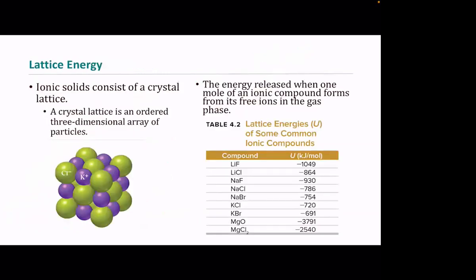For example, magnesium oxide with +2 and -2 charges has a lattice energy of 3791 kJ/mol. This is measured as the energy released — that's why it's a negative sign — when one mole of an ionic compound forms. So if you take sodium metal, store it under oil because it's extremely reactive, and pump in chlorine gas, they react to form sodium chloride. The energy released per mole is the lattice energy.